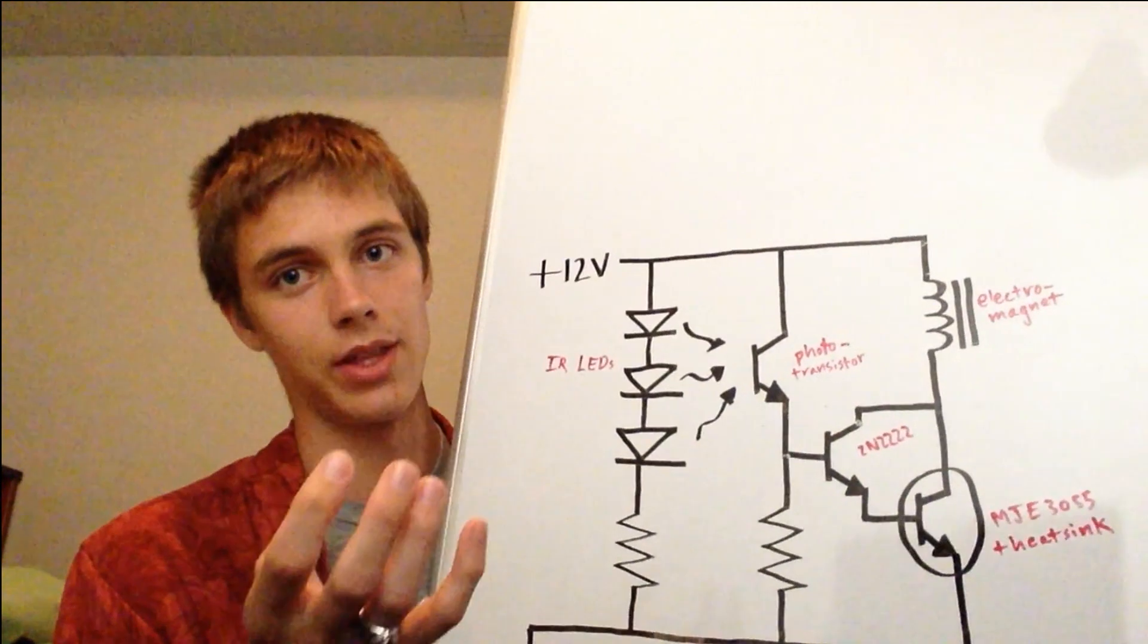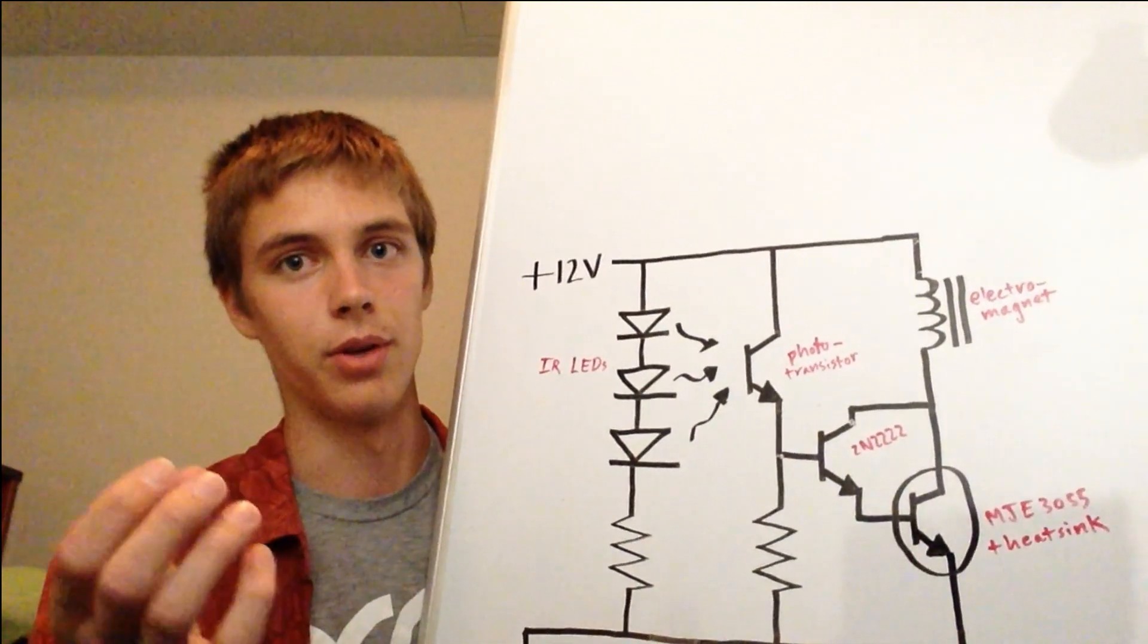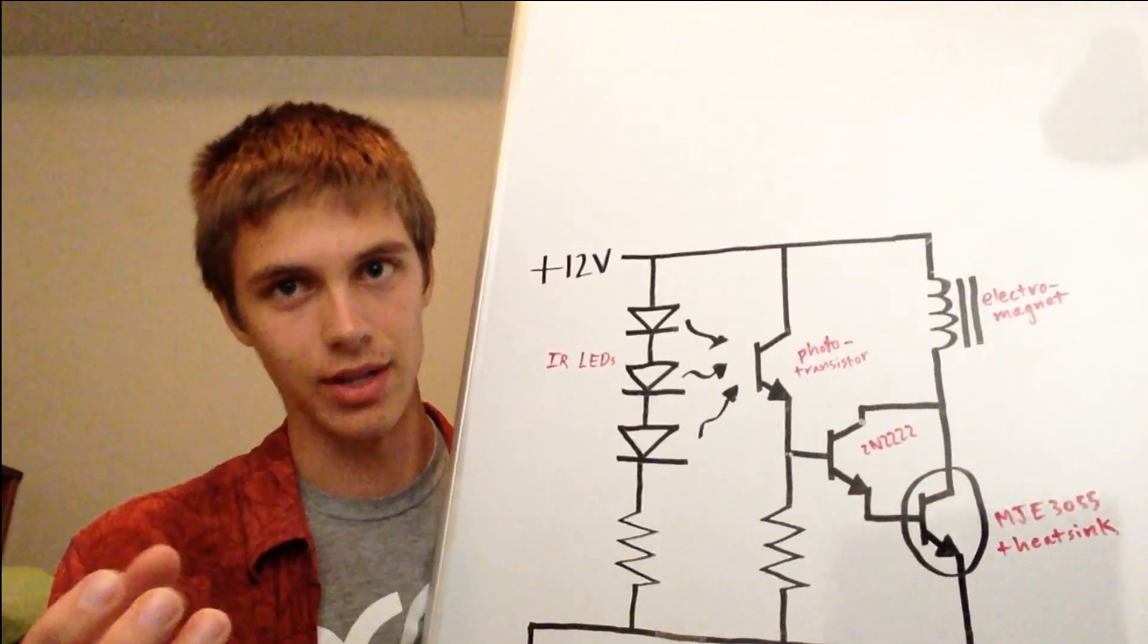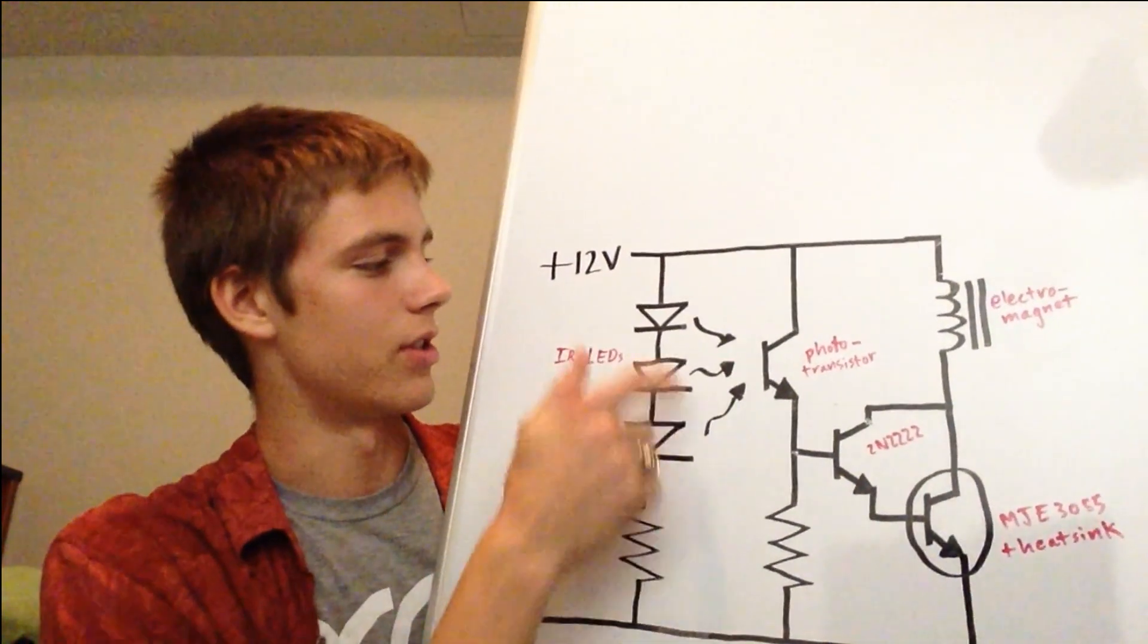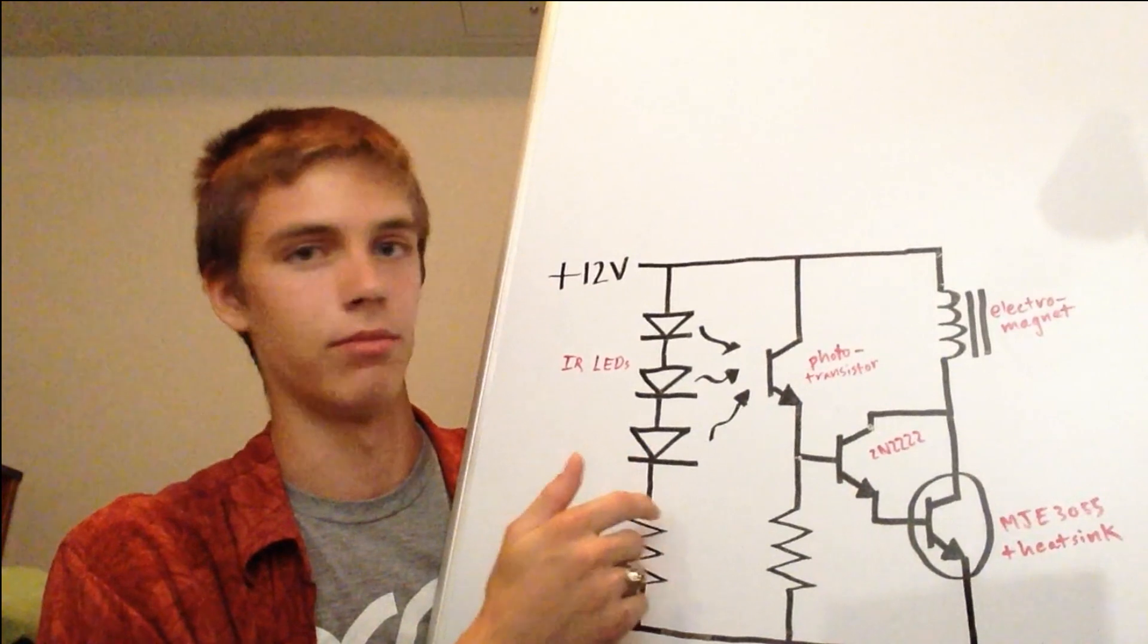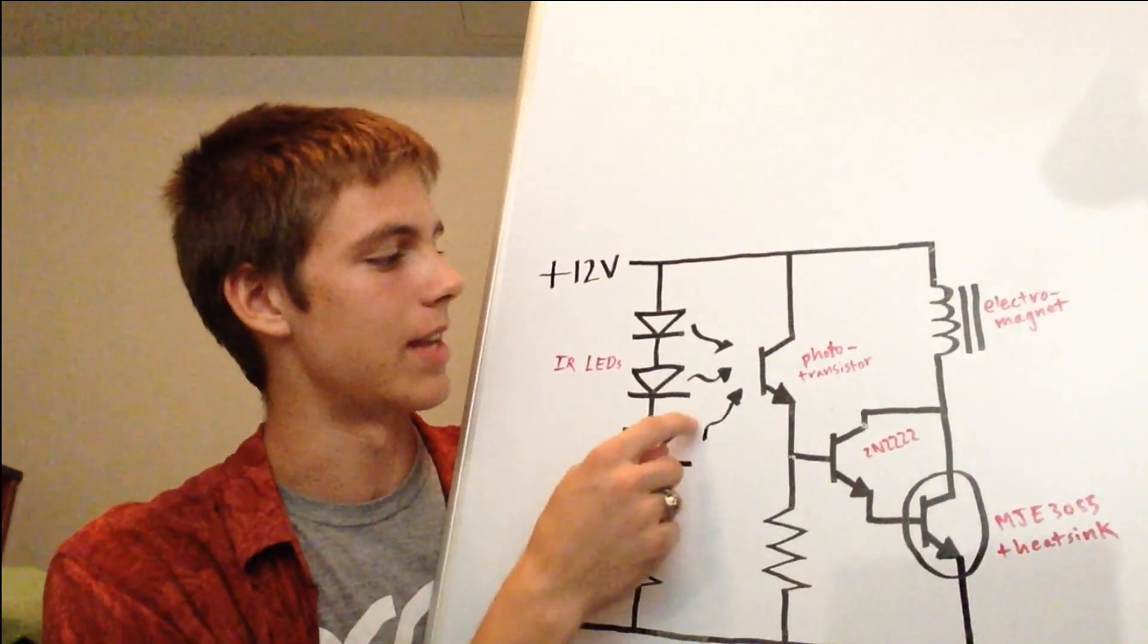And the less light that you get over here meaning that the floater's too close actually means that there's less current flowing through here and less amplified current than flowing through the electromagnet. So when the floater gets too close the magnet shuts down and it drops the floater back down. And this bit over here is just the infrared LEDs that I pointed out were on the other side of the photo gate that actually send their light to the photo transistor.